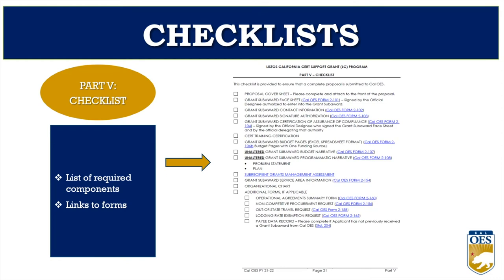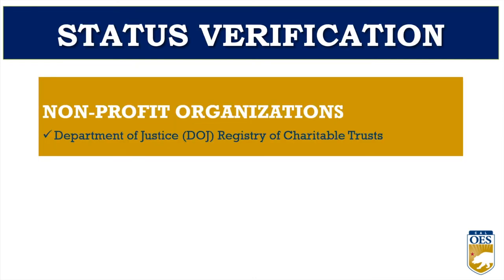Part 3 is a checklist that includes a list of required documents and links to the most current forms. The checklist includes all required components and links to each form. Under the Additional Forms section, those forms may or may not be required depending on your budget — for example, if you do not have out-of-state travel, you will not need to include that form. For those with 501c3 status, once your proposal is received, your program specialist will conduct status verification right away.